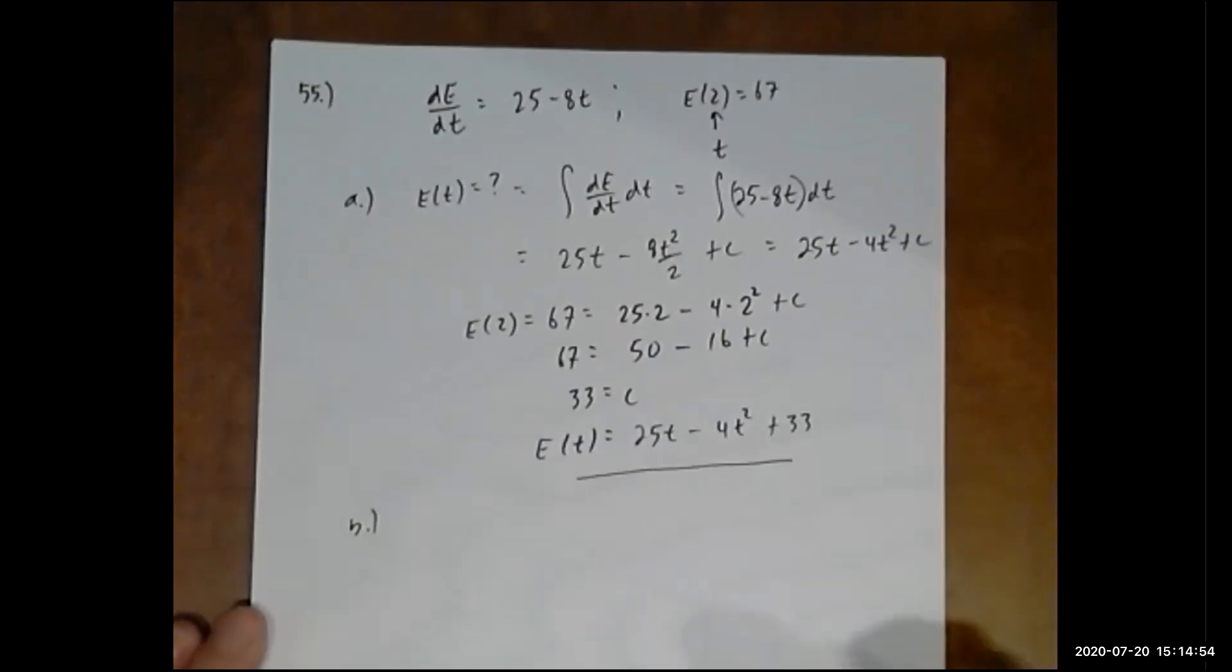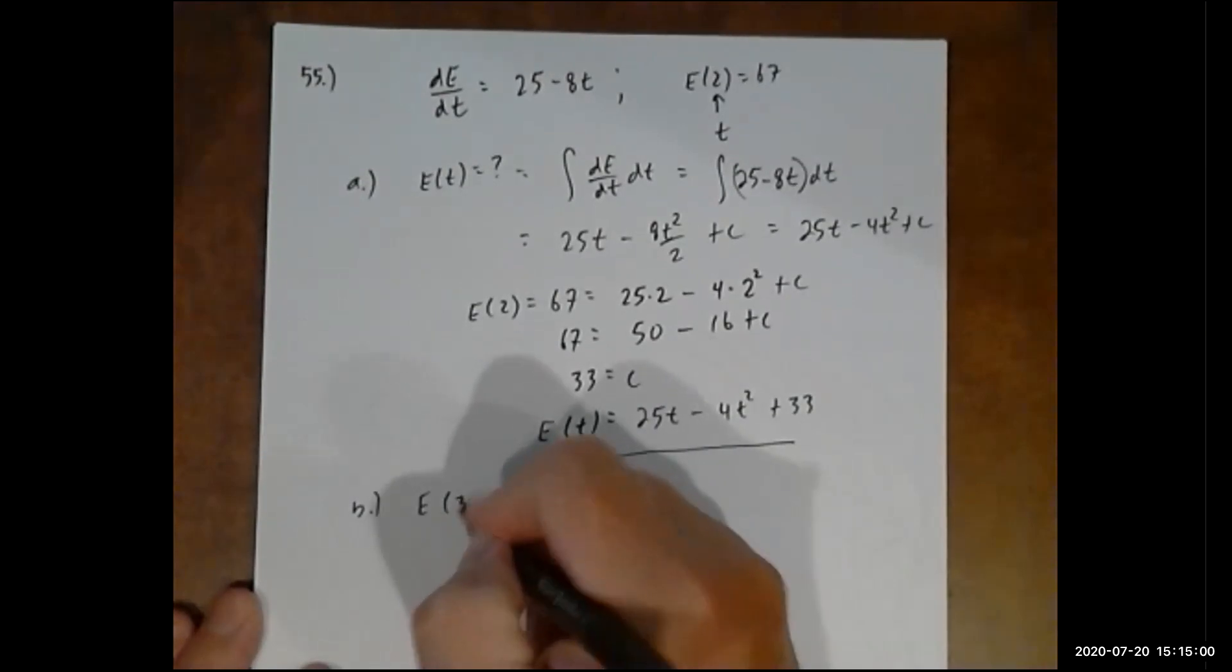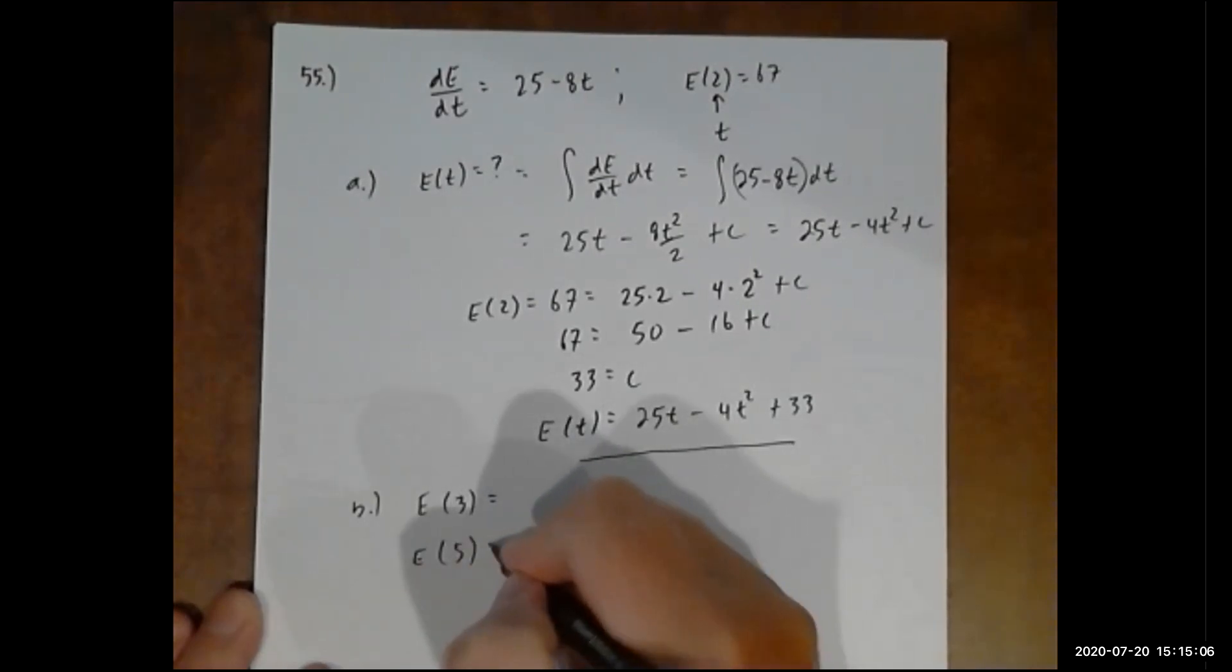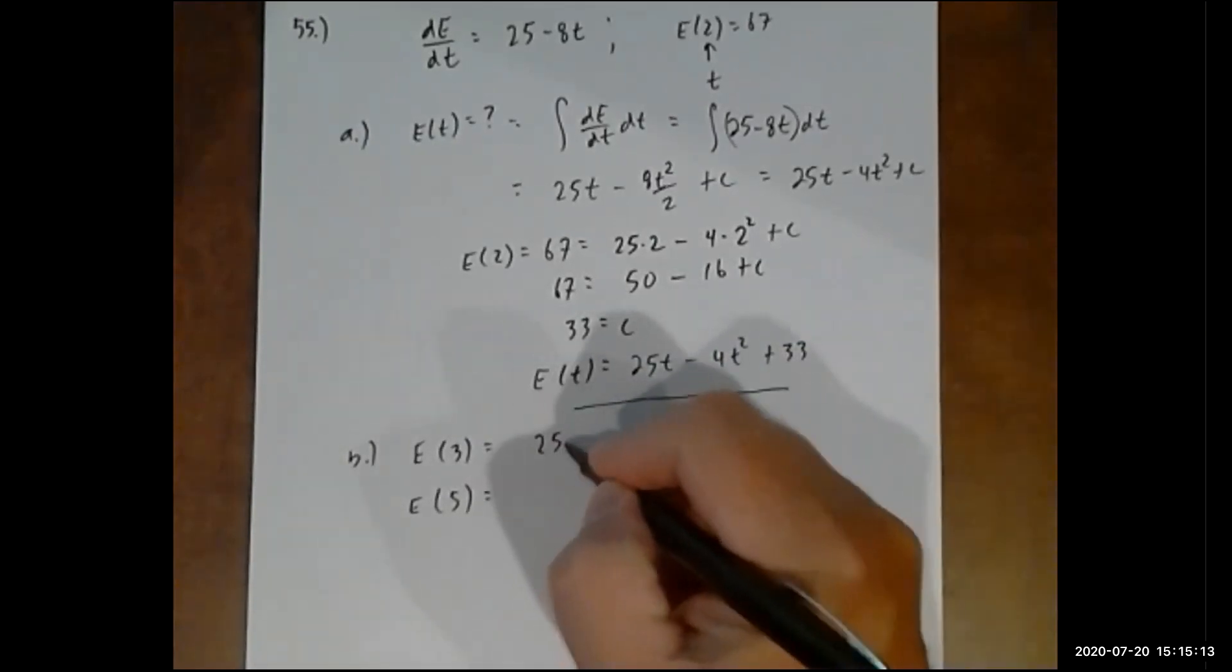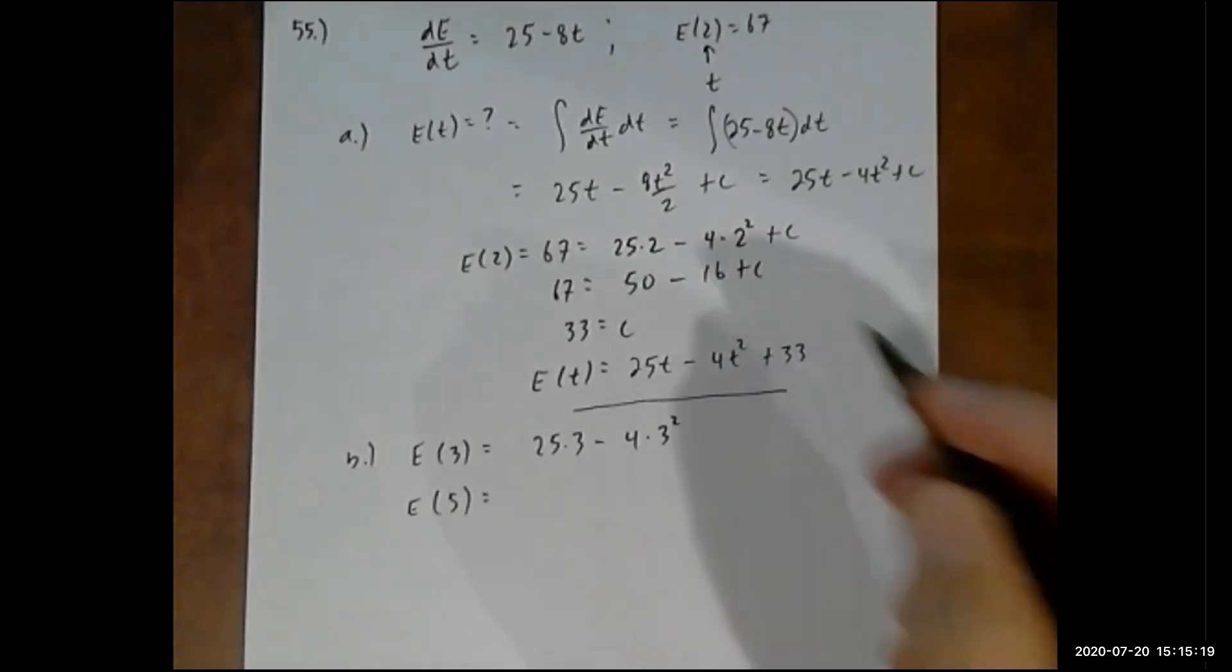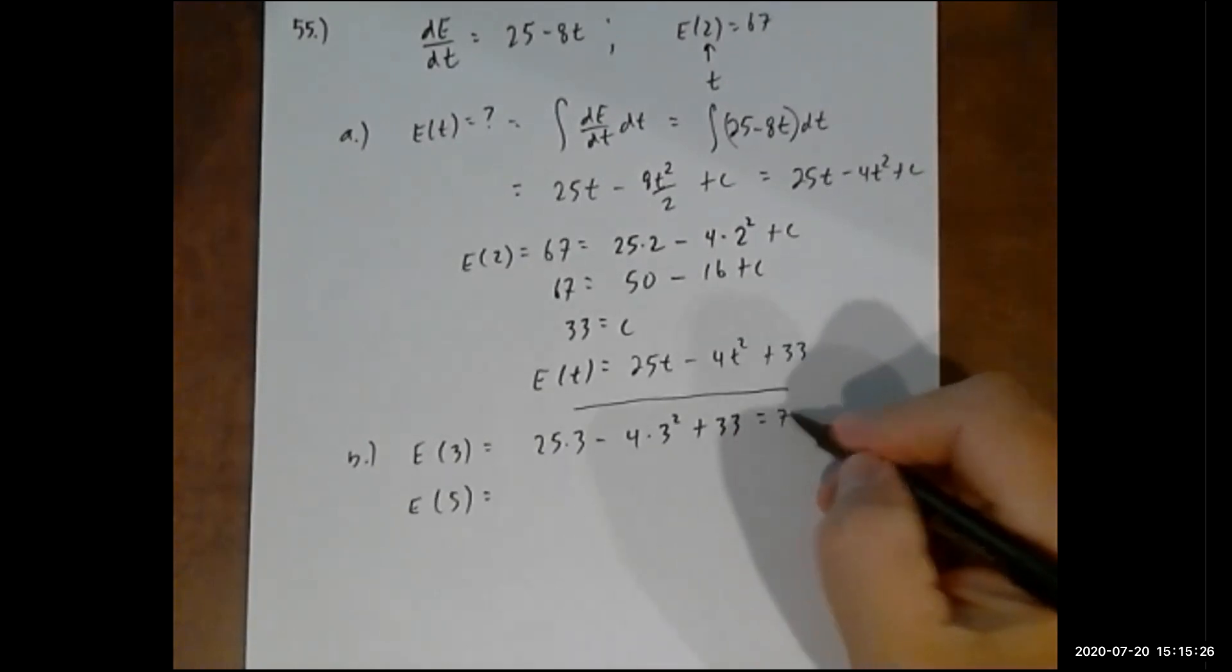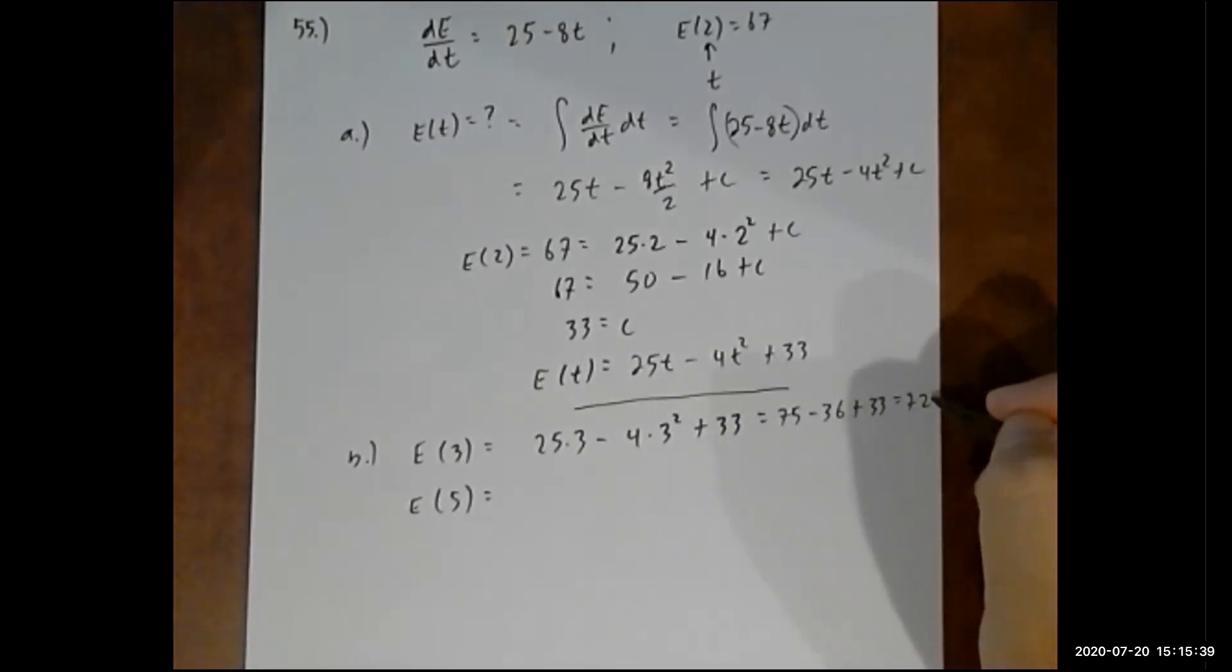Let's go ahead and do part B. Now that we have this equation for E, they want to know what's the efficiency at three hours. I just plug in 3 for t: 25 times 3 minus 4 times 3 squared plus 33. 75 minus 36 plus 33. I think it's 72 percent efficient.